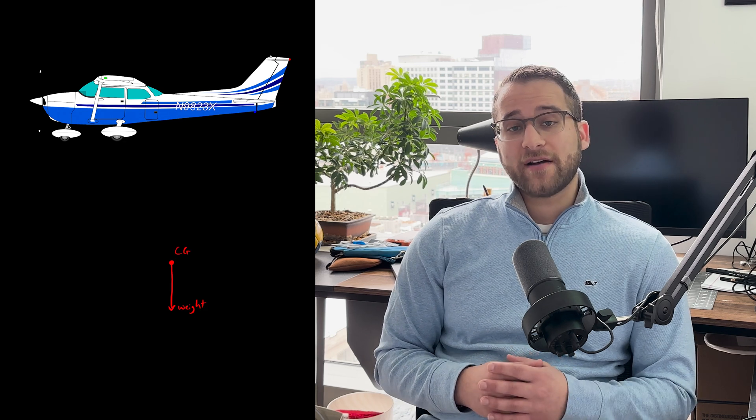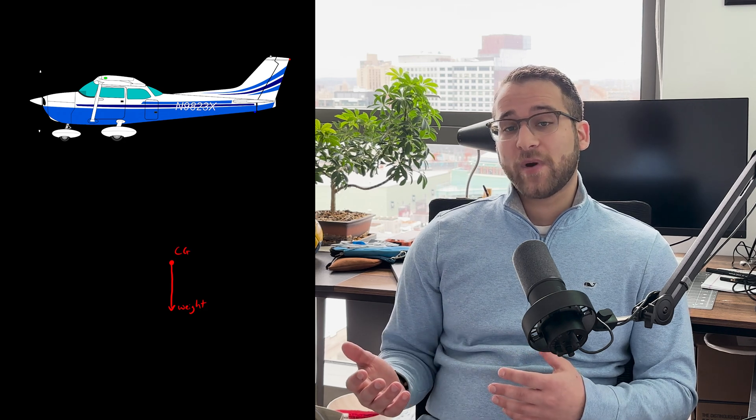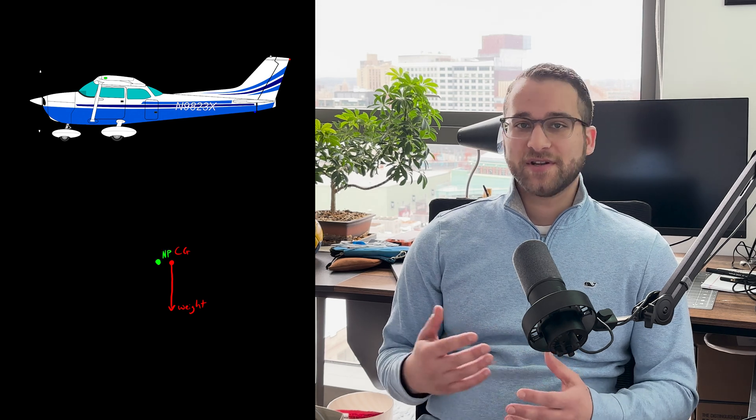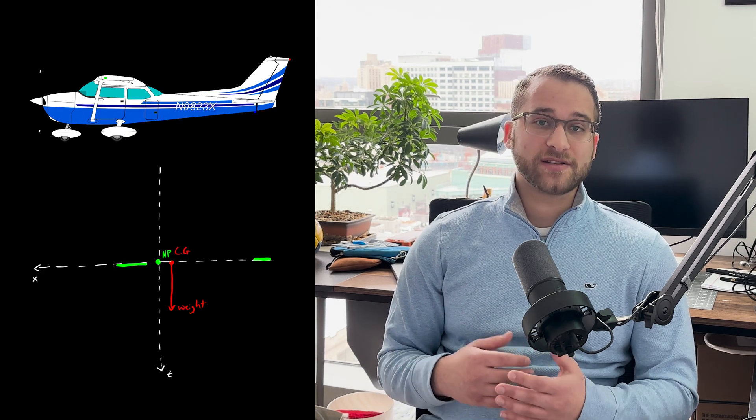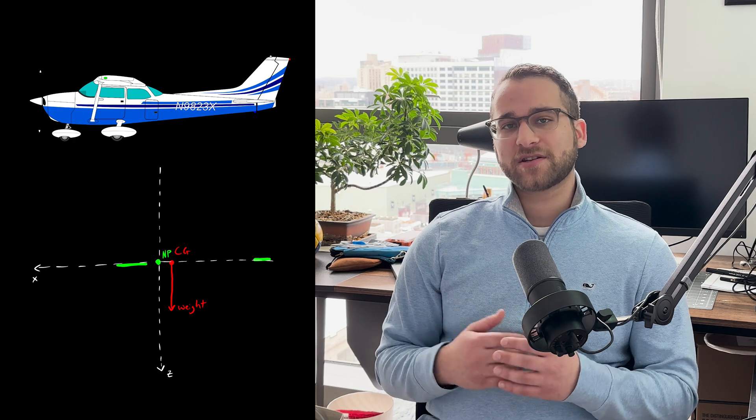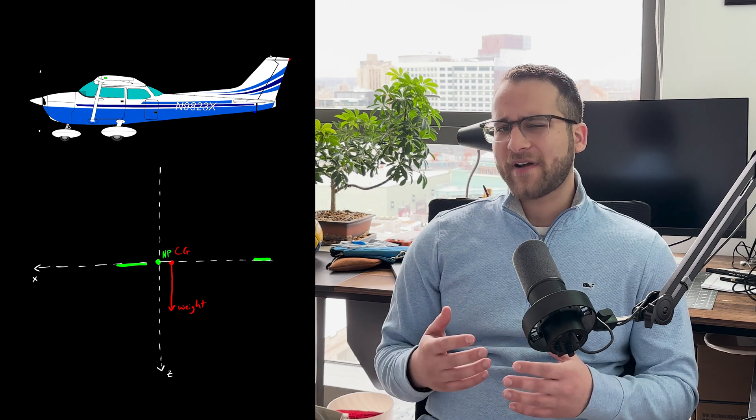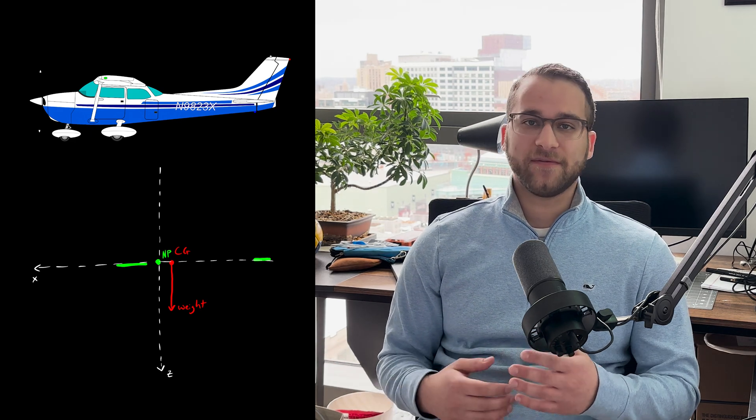Okay, so if we're looking at the aircraft, there are two points we need to understand. The center of gravity, this is where all of the aircraft's weight is effectively concentrated, and the neutral point, also known as the aerodynamic center. This is where the pitching moment of the aircraft does not depend on the angle of attack. The location, shape, and size of the wings and horizontal stabilizer are the biggest contributors to this. Other factors include the propulsion system and the fuselage.